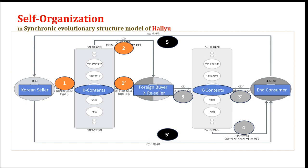Let's look at the left side of the picture. Korean sellers and foreign buyers face each other over K-Culture contents — number one, one prime. At this meeting, foreign buyers purchase K-Culture contents — number two. Foreign buyers who purchase K-Culture contents either become the end consumer or reseller. If they are not an end consumer, they face the final consumer in their own country or a third country — number three, three prime. In this meeting, the end consumer purchases the K-Culture contents secured by the reseller from the Korean seller — number four.